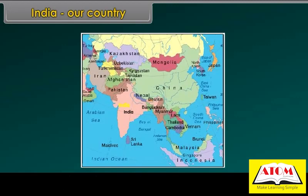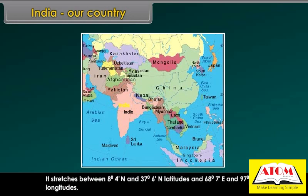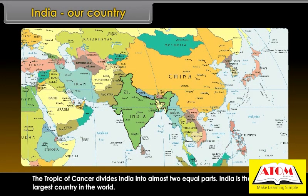India belongs to Asia, the largest continent in the world. It is situated in the southern part of Asia. It covers an area of 3.28 million square kilometers. It stretches between 8°4' north and 37°6' north latitudes and 68°7' east and 97°25' east longitudes. The Tropic of Cancer divides India into almost two equal parts.